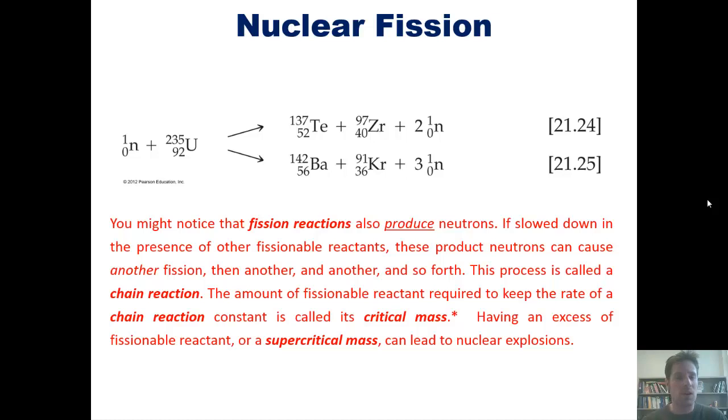The amount of fissionable reactant required to keep the rate of a chain reaction constant is called its critical mass. Having an excess of fissionable reactant, or supercritical mass, can lead to a nuclear explosion. The critical mass of uranium-235 happens to be 50 kilograms per nuclear reactor.